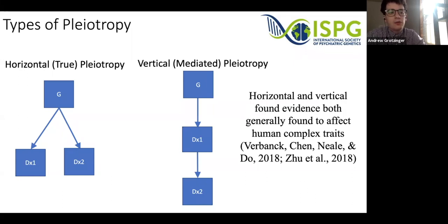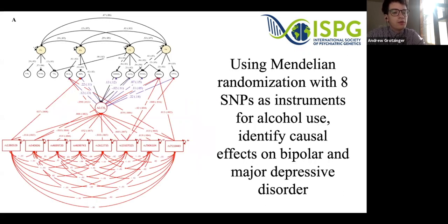While the general rates of horizontal and vertical pleiotropy remain to be tested within psychiatric disorders, in general we find for human complex traits there tends to be a mix of both, which likely also holds for the psychiatric space. One way to examine vertical pleiotropy is using Mendelian randomization, which we also did with the 11-disorder paper, using eight SNPs as instruments for alcohol use disorder. We indeed find causal effects of alcohol use disorder on bipolar disorder and major depression using those eight SNPs as instruments.